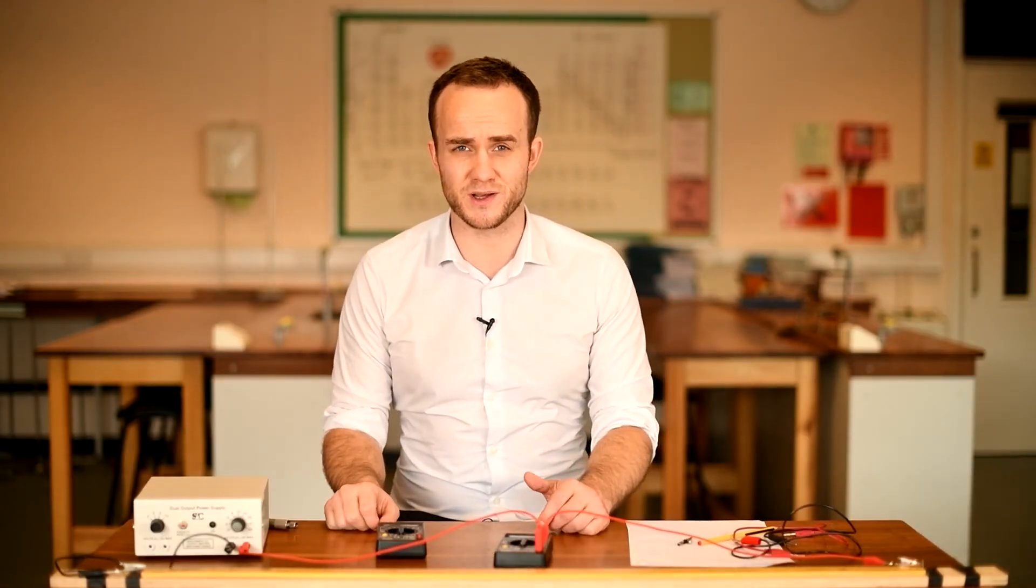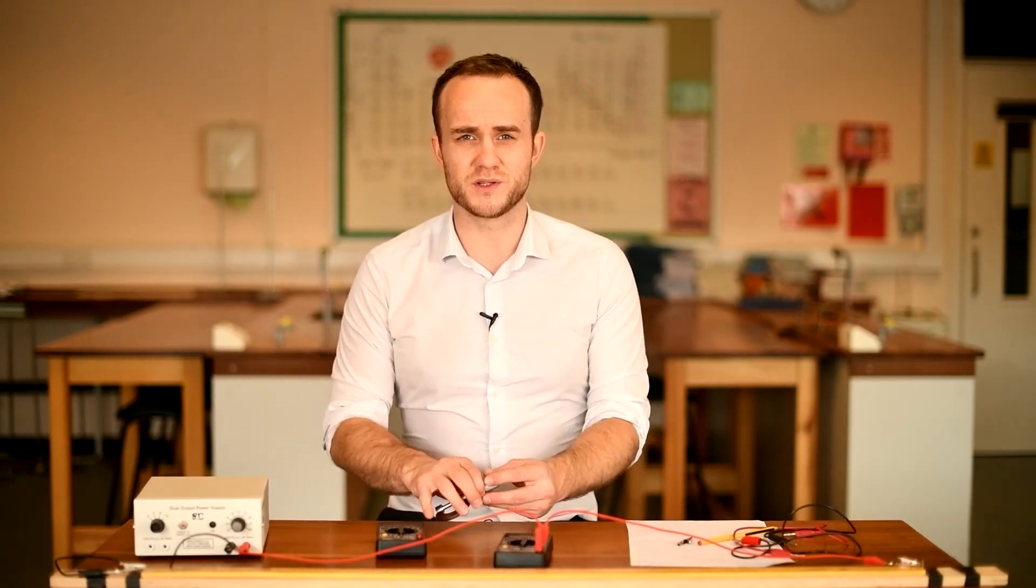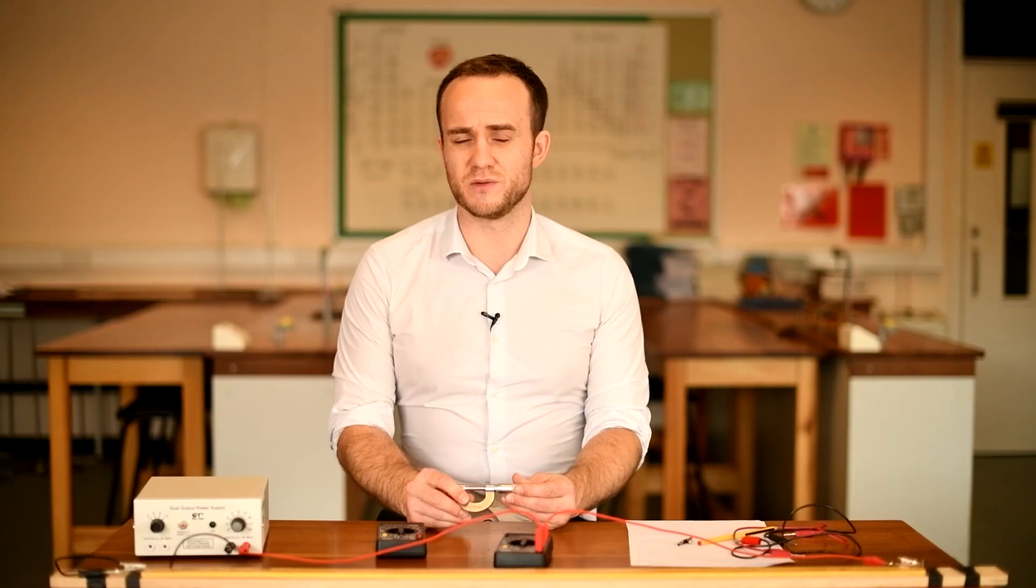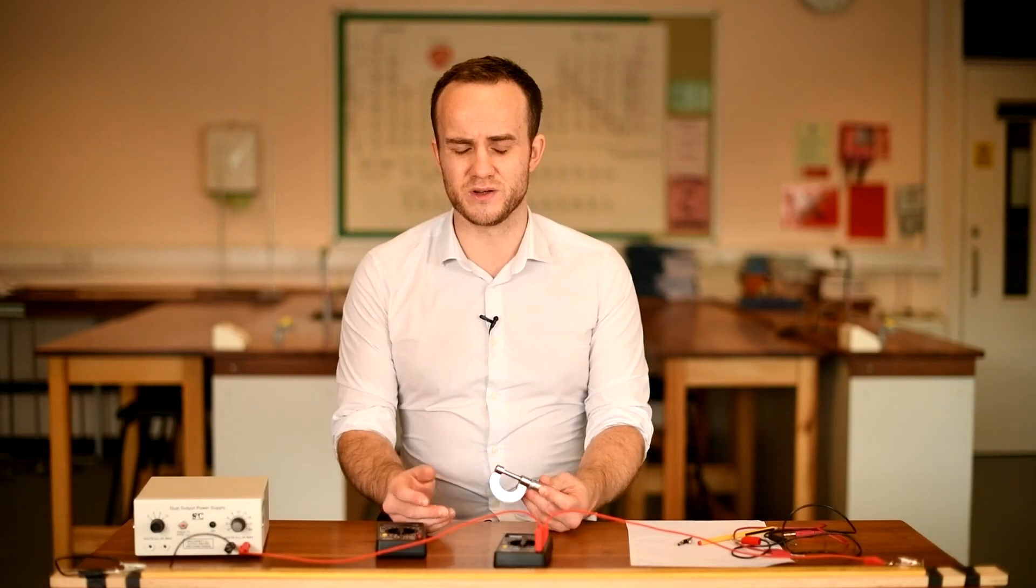The first thing we need to do is measure the diameter of the wire, because we need to calculate the cross-sectional area. And so I'm going to be using a micrometer. We don't want to use a ruler because the resolution of that is going to be a millimetre, and so it's not going to be good enough.